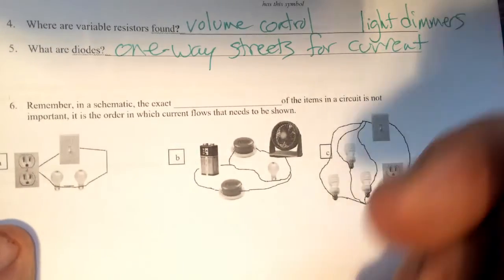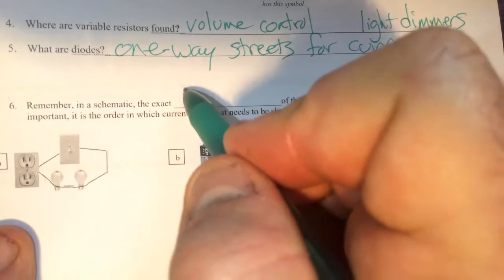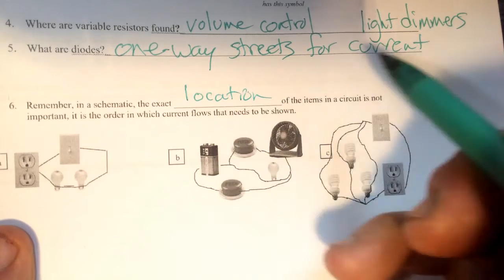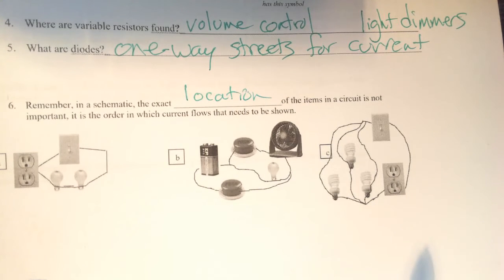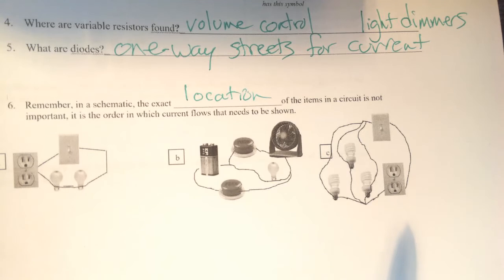Number six. Remember that in a schematic, the exact location of the items in a circuit is not important. What is important is the order that the current flows through the circuit. When you have a blueprint for a house, it's really important that you show the door to be exactly where you want the door to be. Same thing for everything else. The builders are going to look at it and say, oh, he wants it 10 inches away from this location or whatever, and put the door there.